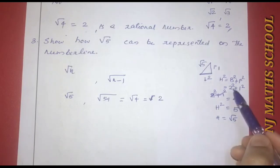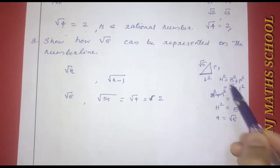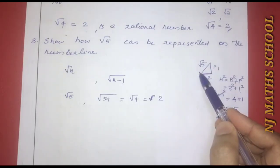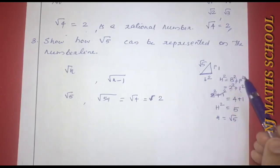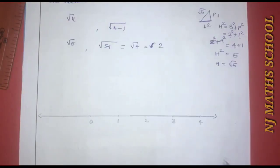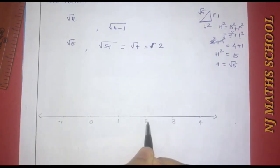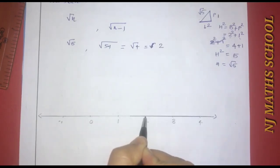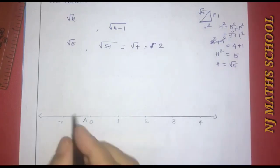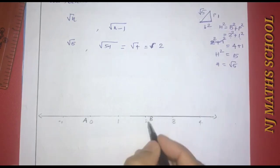We take base = 2 units and perpendicular = 1 unit, giving hypotenuse = √5. Now we transfer this to the number line. Draw a number line and mark points 0, 1, 2, 3. Take 2 units as the base from point 0 to point B. Mark point A at 0 and point B at 2.